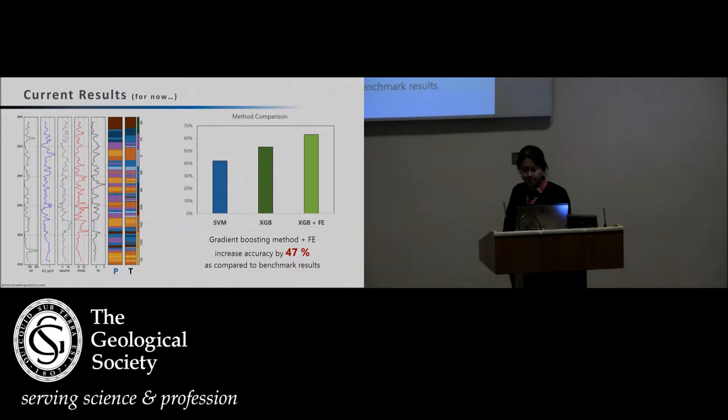To reiterate, the XGBoost algorithm showed an increase of only 17% as compared to the benchmark using support vector machine algorithm. But when you feature augment the variables, it increased the overall results by 47%.